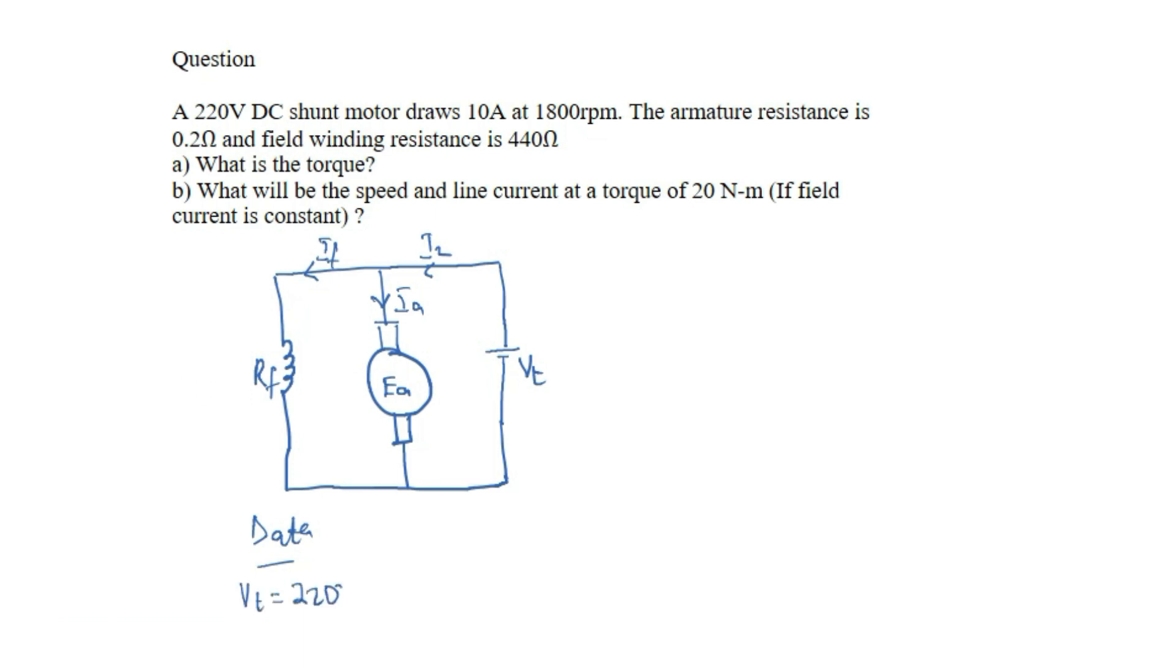We are given VT to be equals to 220 volts, that is terminal voltage. We are given the speed of the motor to be 1800 rpm. The question said the motor draws 10 ampere which means IL is 10 amps. The field winding resistance is 0.2 ohms.